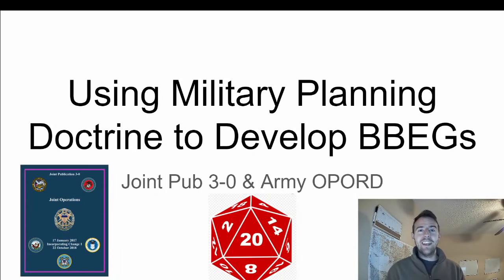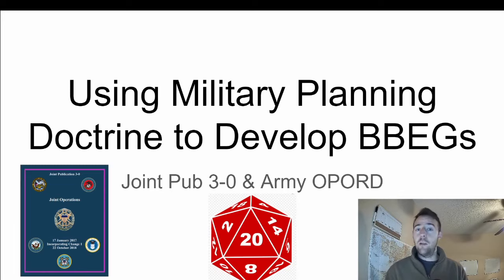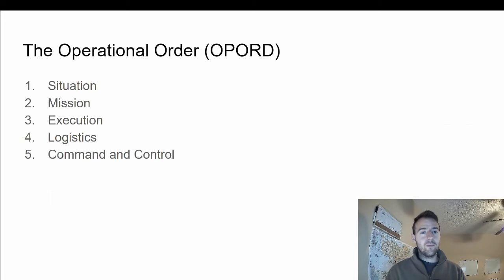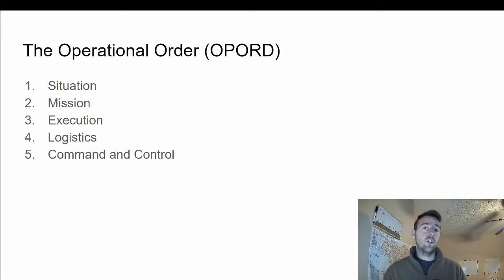Hello everyone, today we're going to be talking about how to use military planning doctrine to develop better Big Bad Evil Guys for Dungeons & Dragons. Specifically, we're going to be looking at Joint Pub 3-0 as well as the Army's OPORD, which stands for Operational Order — a five-step planning process that the Army uses when conducting missions.